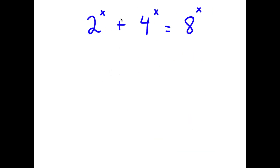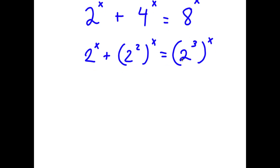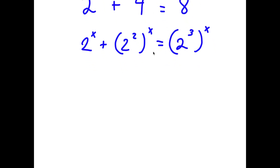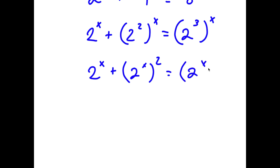In this problem, I have 2 to the power of x plus 4 to the power of x is equal to 8 to the power of x. To solve this, I'm going to rewrite this as 2 to the power of x plus 2 squared to the power of x is equal to 2 to the power of 3 to the power of x, rewriting 4 as 2 squared and 8 as 2 to the power of 3. Now I rewrite this as 2 to the power of x plus 2 to the power of x, all to the power of 2, is equal to 2 to the power of x, all to the power of 3.